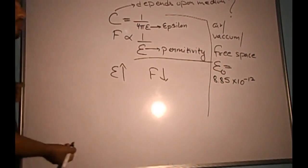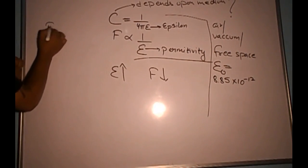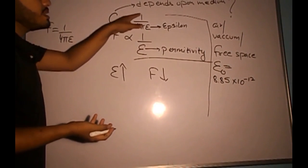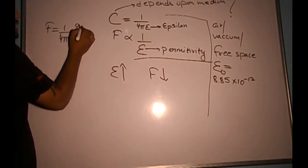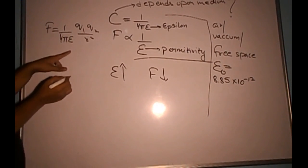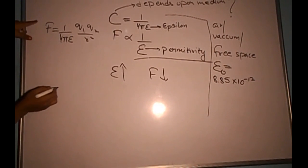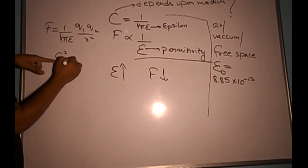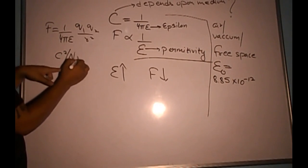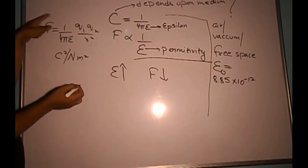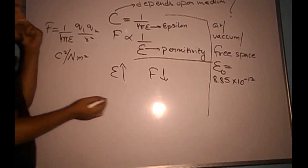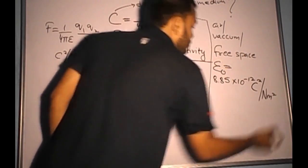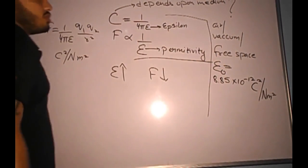Let's work out the unit of permittivity. Writing Coulomb's formula: F = (1/4πε) × Q1Q2/R². Rearranging to make epsilon the subject, we get the unit as coulombs squared in the numerator and Newton-meter squared in the denominator — that is, C²/(N·m²). This is the SI unit of permittivity.